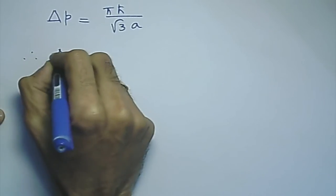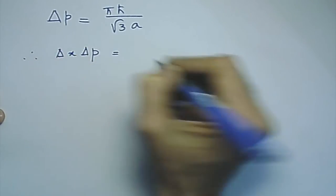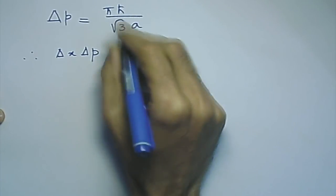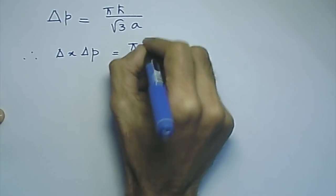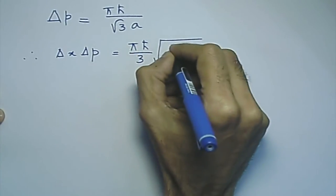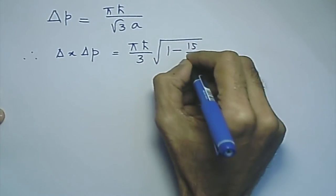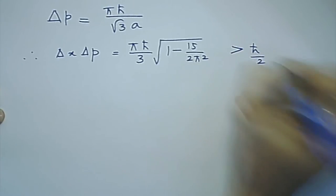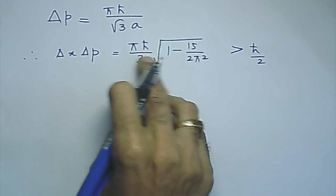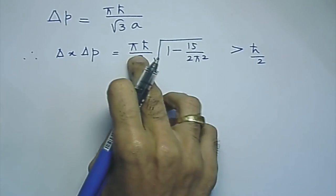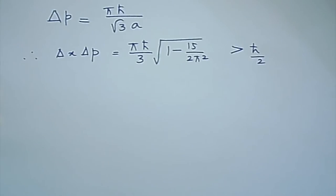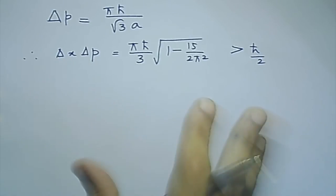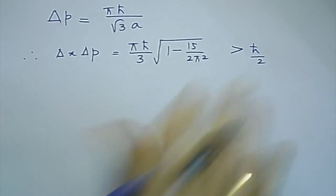The product Δx · Δp, when substituted, gives ħ/3 times sqrt(1 − 15/(2π²)), which is definitely more than ħ/2. You can see that multiplying with π this is going to be more than ħ/2. This is proved in various situations like the harmonic oscillator and other examples. In this case also, the uncertainty principle is shown to be valid.